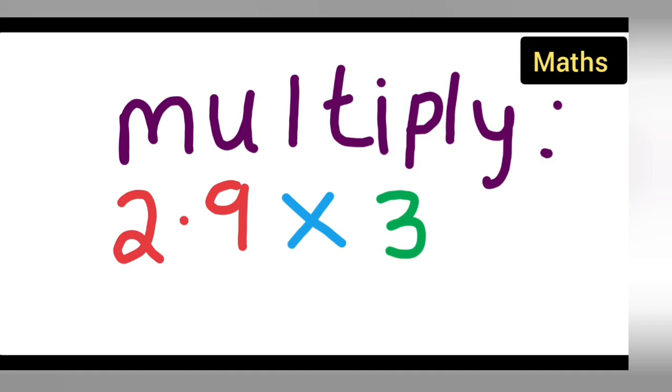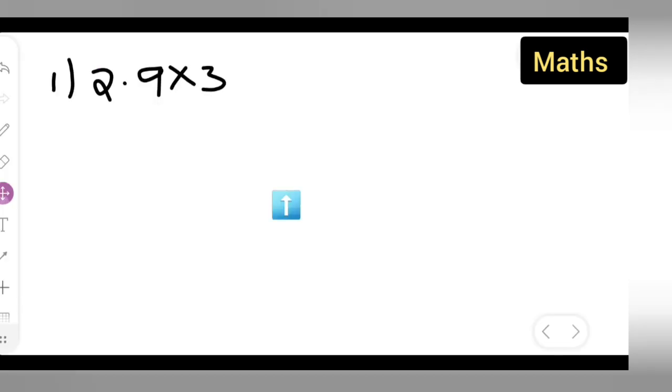Welcome to today's class of mathematics. Today's question is, let us see how to multiply 2.9 multiplied by 3. So first thing we're going to do is write down the question: 2.9 multiplied by 3.